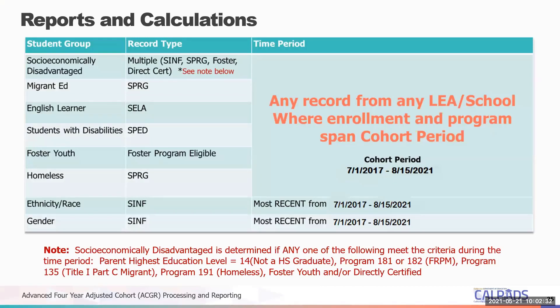The reports and calculations pull from specific student groups and time periods. You have your socioeconomically disadvantaged, migrant ed, English learners, students with disabilities, foster youth, and homeless. That data will come from any record from any LEA where the enrollment span covers the cohort period — for this year, July 1st, 2017 through August 15th, 2021.